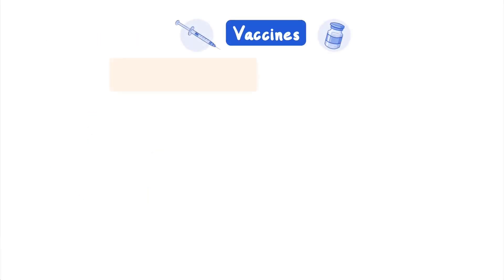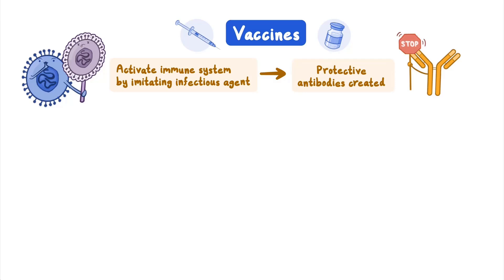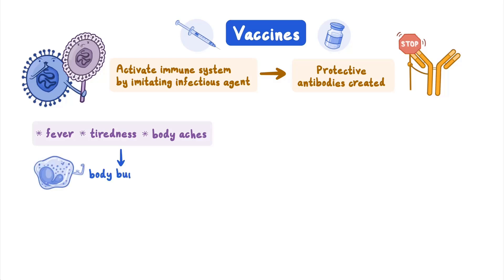Vaccines activate a person's immune system by imitating an infectious agent to cause protective antibodies to be created. This protects you from disease without causing severe illness. Since your body is still fighting this imitation of the agent, you might still feel symptoms such as fever, tiredness, or body aches after you receive a vaccine. This does not mean that you are sick with an infection — it is a sign that the vaccine is doing what it's designed to do and that your body is building protection.